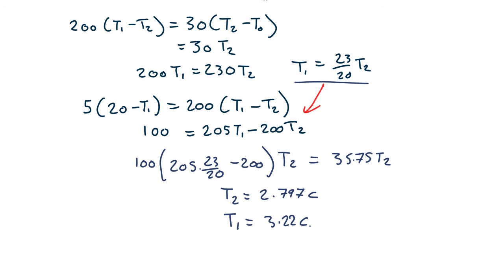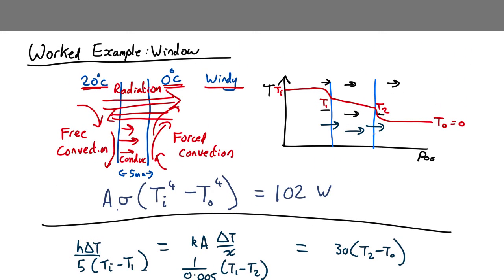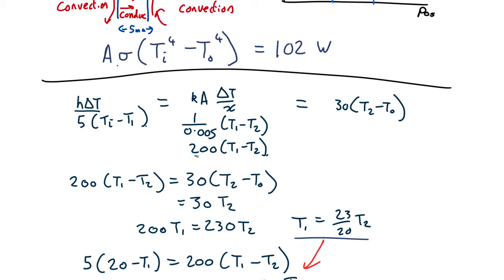Which is interesting — what that's telling us is that the glass is pretty cold, at about 2.7 degrees on the outside and 3 degrees on the inside. So most of the temperature difference occurs from the air to the inside surface of the glass; the temperature difference across the glass itself and on the outside is relatively small. This makes sense because there's a 200 in front of the conduction term and a 30 in front of the forced convection term, meaning heat transfer through the glass is much more efficient. Generally, wherever heat transfer is least efficient you expect the most temperature difference to drive it.